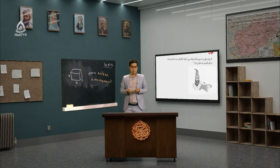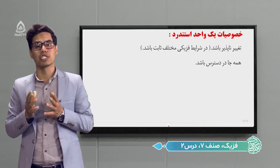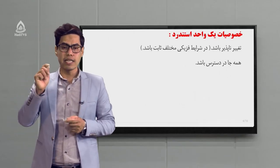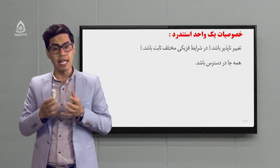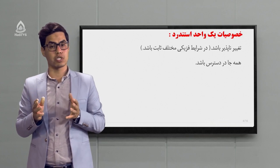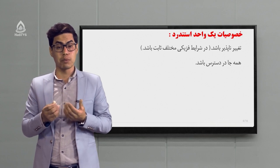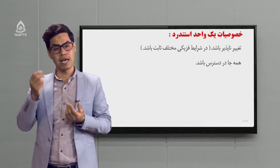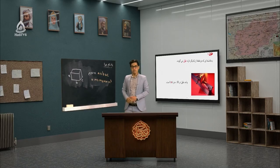پس می‌گوییم که یک واحد استاندارد چه خصوصیتی باید داشته باشد؟ اول: تغییرناپذیر باشد، یعنی در شرایط فیزیکی مختلف تغییر نکند. دوم: همه جا در دسترس باشد، در همه کشورها و همه شهرها این واحد در دسترس باشد و بتوانند از این واحد استفاده کنند.